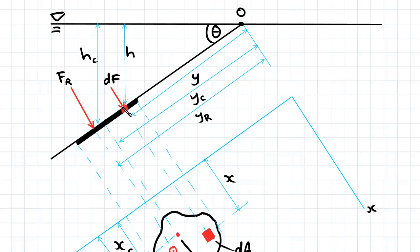H is the height from the top of the fluid to any point, any area dA. HC is the height from the top of the fluid to the centroid.